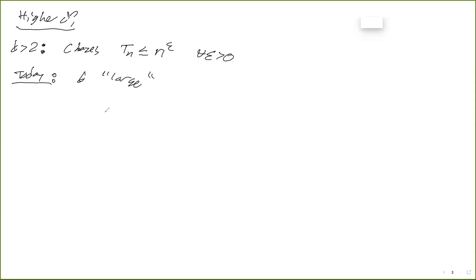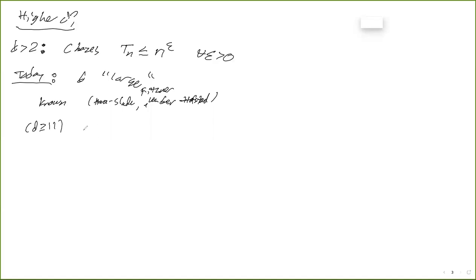Today I'm going to talk about D large. I'll state precisely what Luigi and I need when I state the theorem. It's known due to Hara-Slade and also Fitzner and van der Hofstad that if D is sufficiently large — now known for D at least 11 — there is no percolation at p_c. There are no infinite zero-weight paths almost surely. In particular, we have the bare fact that T_N goes to infinity as N goes to infinity almost surely — you have to keep taking weight-one edges. This is not very quantitative, but it's much more than is known in three dimensions where we still don't even know this fact.